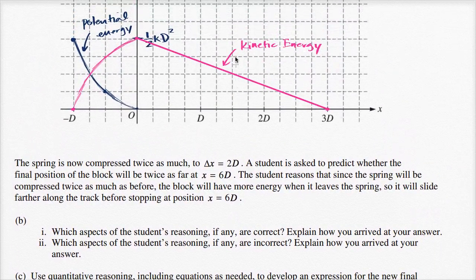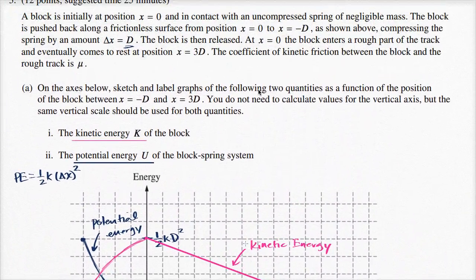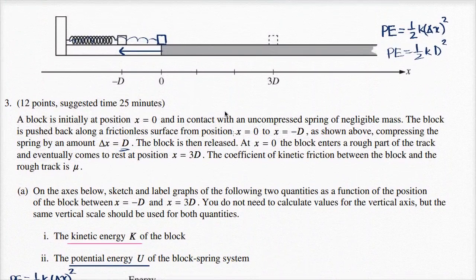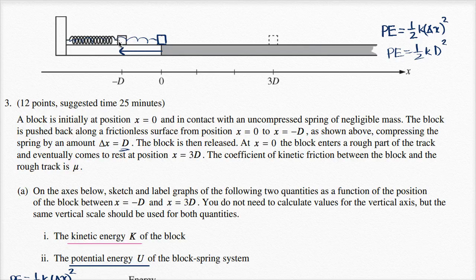So let's just think about what the student is saying. In the first scenario, we compressed the spring by D, and then the spring accelerates the block. Right when we get back to x equals zero, all of that potential energy has been turned into kinetic energy.